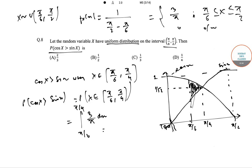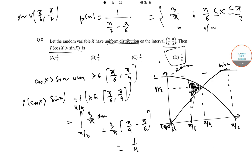Evaluating this, we get (3/π) × (π/4 − π/6), and on solving this we get 1/4. So the correct option is option D.